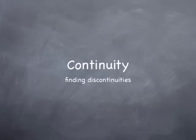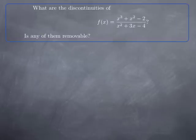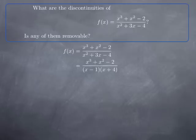Now we're going to look at examples where we're finding discontinuities or conditions for a function to be continuous or intervals of continuity. Let's start with the following question: we consider the function (x³ + x² - 2) / (x² + 3x - 4) and we want to find its discontinuities. We also want to determine if any discontinuities we find are removable or not.